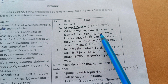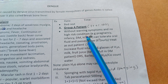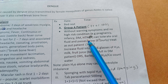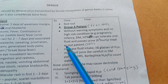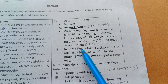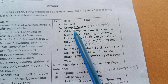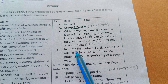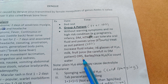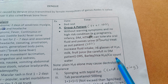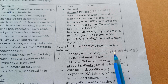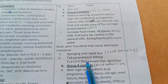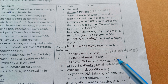Divide patients into Group A, B, and C. Group A patients are those without warning symptoms and no high-risk conditions such as pregnancy, infancy, diabetes, or hypertension, and who can tolerate oral fluids and pass urine every six hours. Treat as outpatient. Encourage fluid intake — more than six glasses of water, milk, fruit juice, ORS, barley water, rice water, or coconut water. Do not give plain water as it can cause electrolyte imbalance. Do cold sponging for high-grade fever and give paracetamol, not exceeding more than four grams per day.